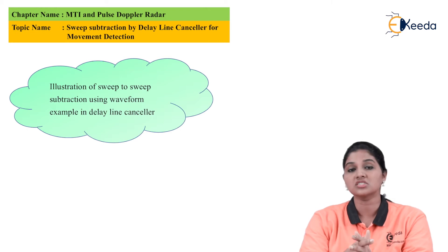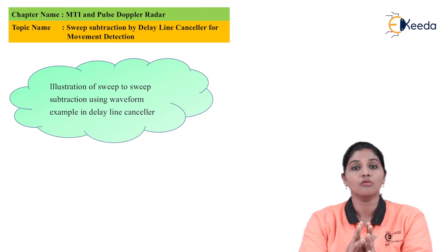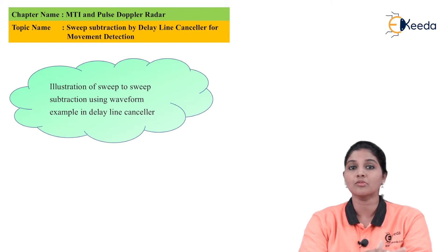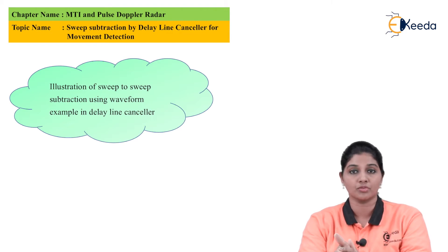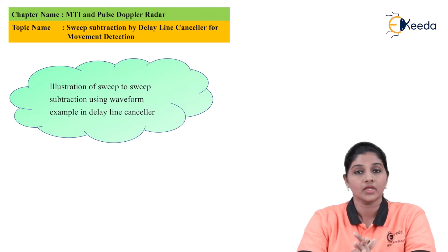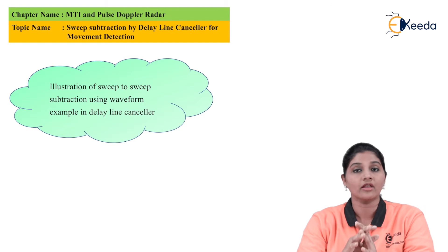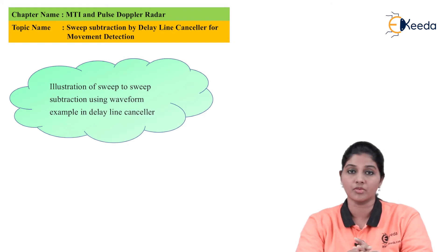Whereas, if we consider the moving target echo, then in case of moving target echo, one sweep has a different type of clutter than the other sweep, and therefore if one sweep is subtracted from the previous sweep, the clutter is cancelled and the remaining residue of that moving target remains.